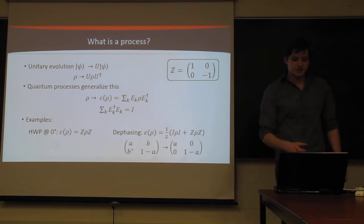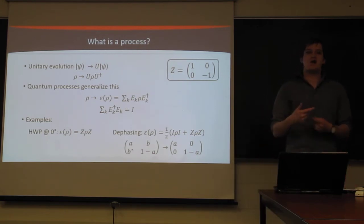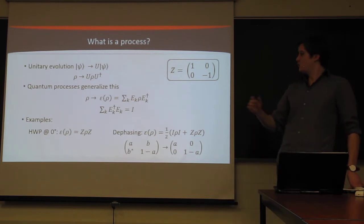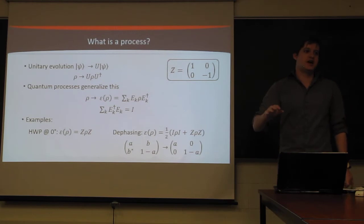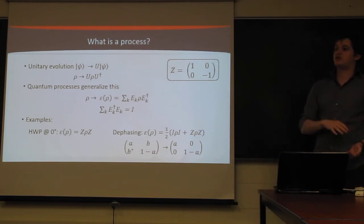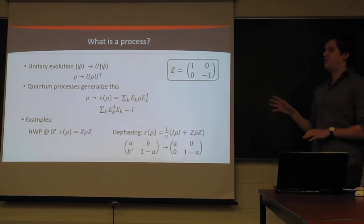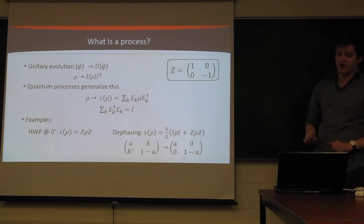Where instead of just having one matrix that multiplies our input state, we can now have a sum of a bunch of these different processes going on. So long as we satisfy this normalization condition. This condition basically ensures that the density matrix that comes out of the process will still have a unit trace. There are some theories that deal with non-trace preserving processes, but we're not really going to talk about this today.